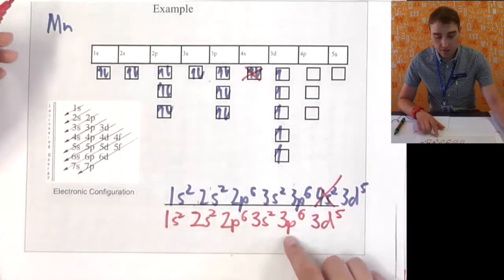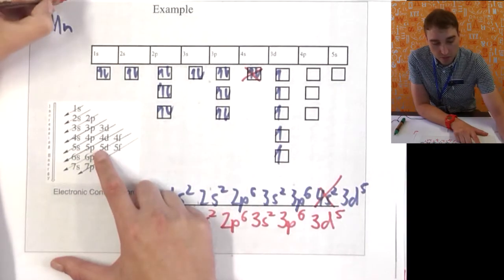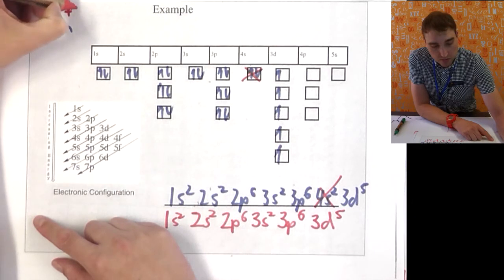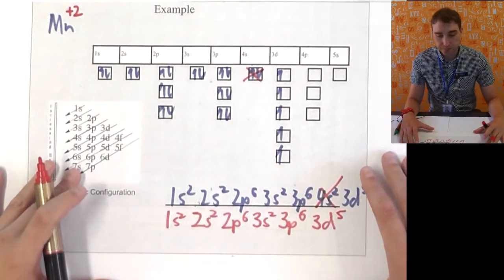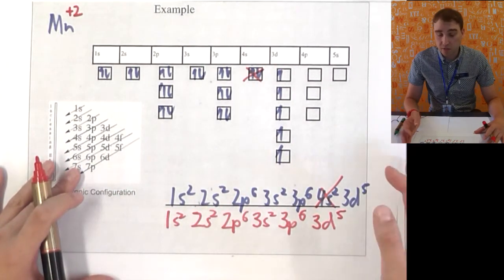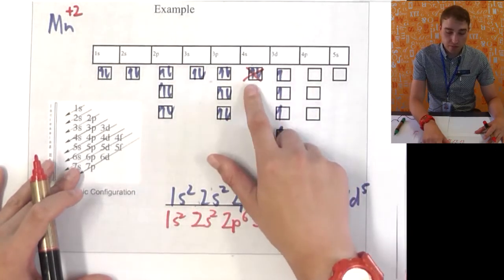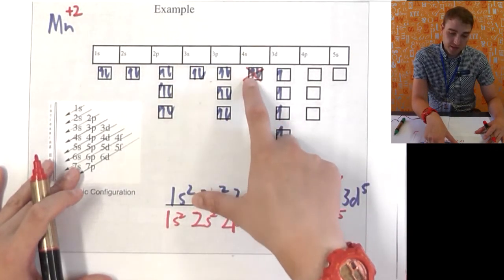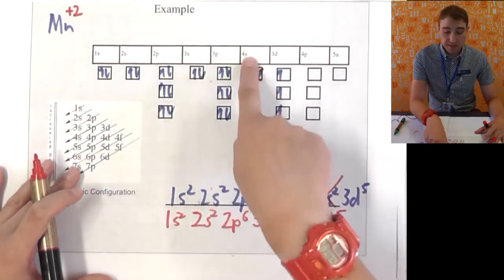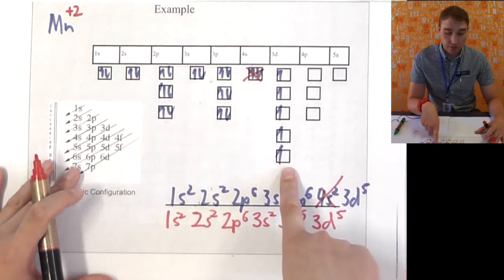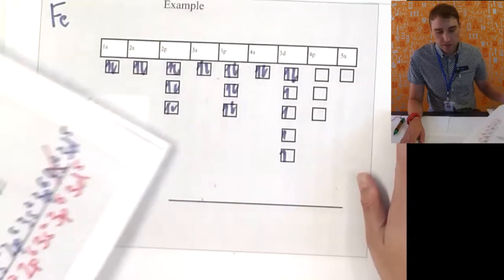That's our electron configuration. We've lost two electrons. We've got two more protons than electrons. So, that gives it a charge of plus 2. This just shows the general rule when we're working with the transition metals. Get rid of the highest principal number electrons first. In this case, get rid of the 4s before you'd get rid of any of the 3d.